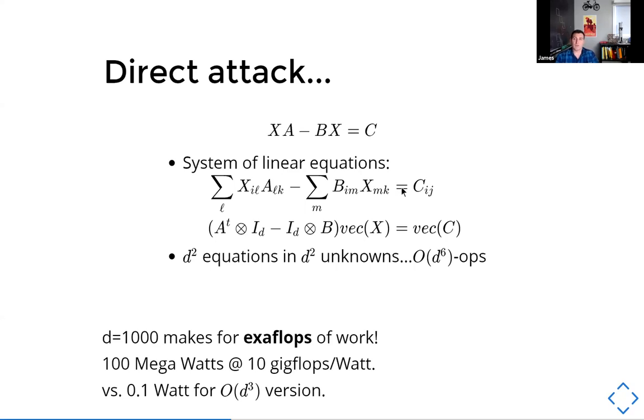And just for the back of the envelope calculations, let's compare how bad this just got by making the simple alteration of x equals y. If d was about a thousand, look, cell phones collect millions of points of data every time they take a picture. So a thousand is still relatively small here. It would take about exaflops worth of work to do it this way. So that's about a hundred megawatts of work at 10 gigaflops per watt compared to just 0.1 watt.